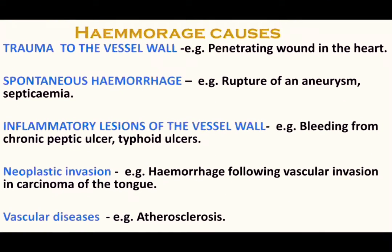Coming to hemorrhage, its causes include: trauma to the vessel wall, such as a penetrating wound to the heart; spontaneous hemorrhage, such as rupture of an aneurysm or septicemia; inflammatory lesions of the vessel wall, such as bleeding from a chronic peptic ulcer or typhoid ulcer; neoplastic invasion, such as hemorrhage following vascular invasion in carcinoma of the tongue; and vascular disease, such as atherosclerosis.